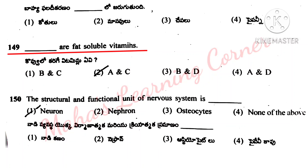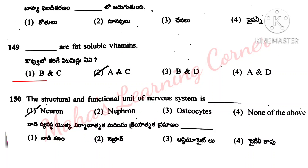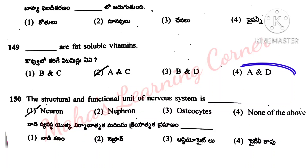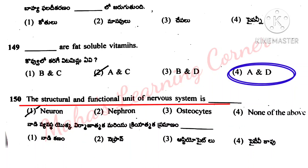Dash are fat-soluble vitamins. Options: B and C, A and C, B and D, A and D. Correct answer option 4: A and D.